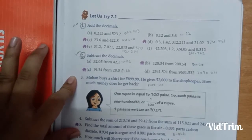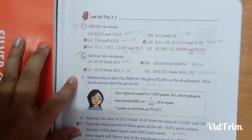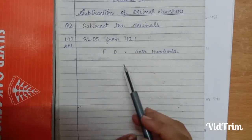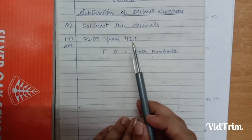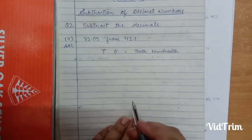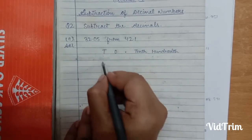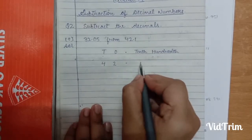For the subtraction, we do question number 2 of exercise 7.1. So question number 2, part A is 32.05 from 42.1. From means that you have to subtract 32.05 from 42.1. The criteria for writing the number is the same as we studied in addition. So for 42.1: 4 is on the tens place, 2 is on the ones place, decimal under decimal, and 1 is on the tenths place.